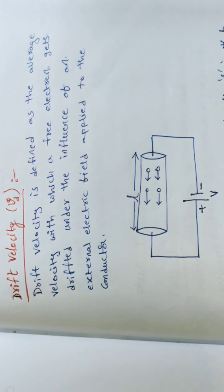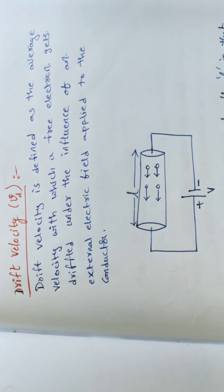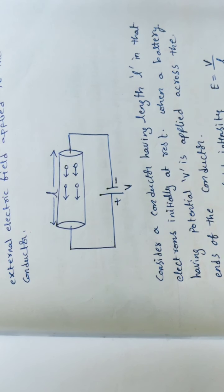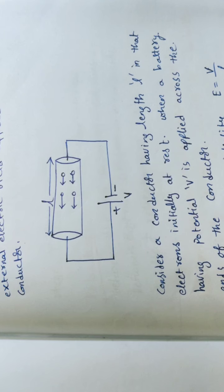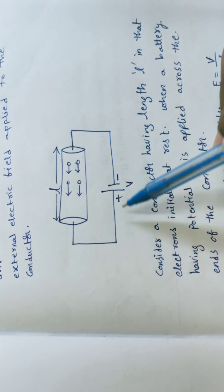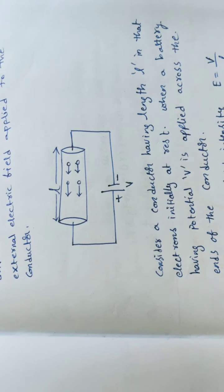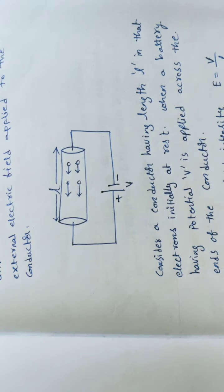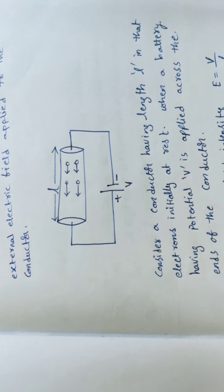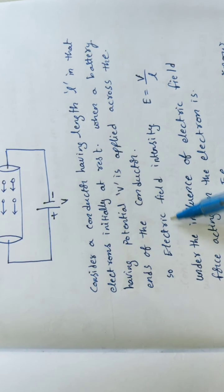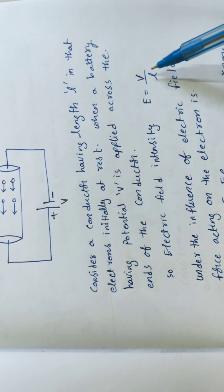Now we will find the relation for drift velocity. Consider a conductor of length L and cross-sectional area A, with its free ends connected to a battery of potential V. When potential is applied between the free ends of the conductor, an electric field intensity will be developed inside it.